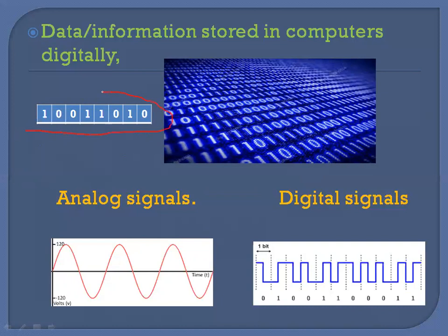Suppose we want to save a single character 'A' into the computer memory. When we save this 'A', 8 bits will be saved into the computer memory. When we open this file again, it will show us the data again in a form which a human can understand easily.